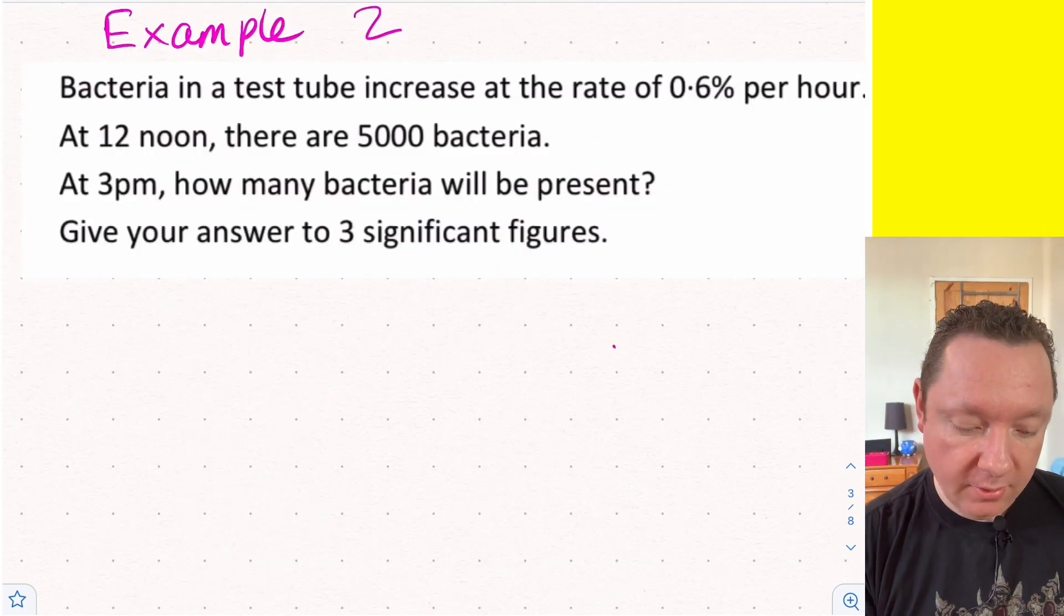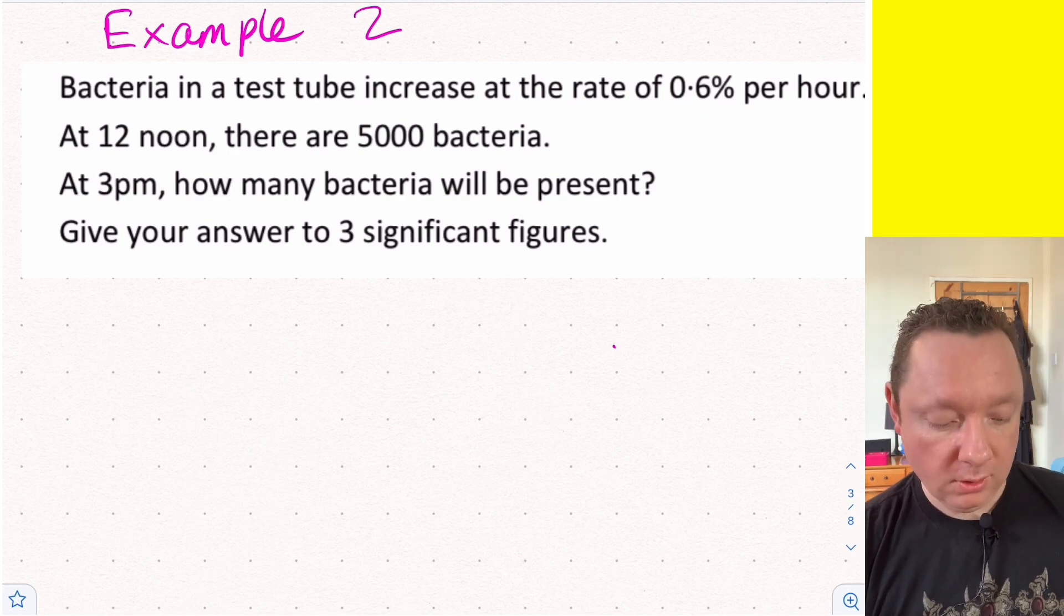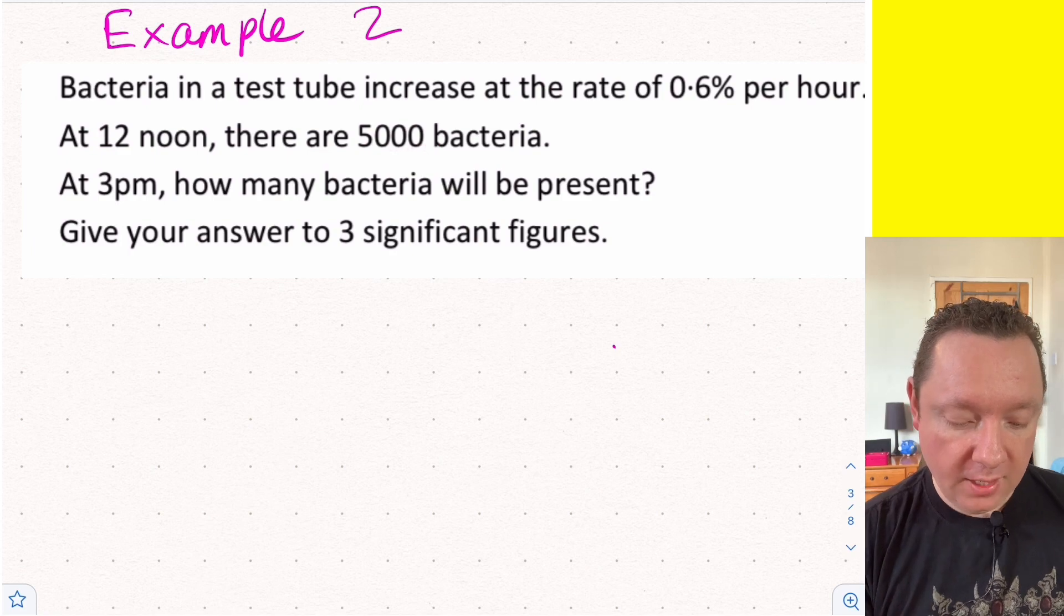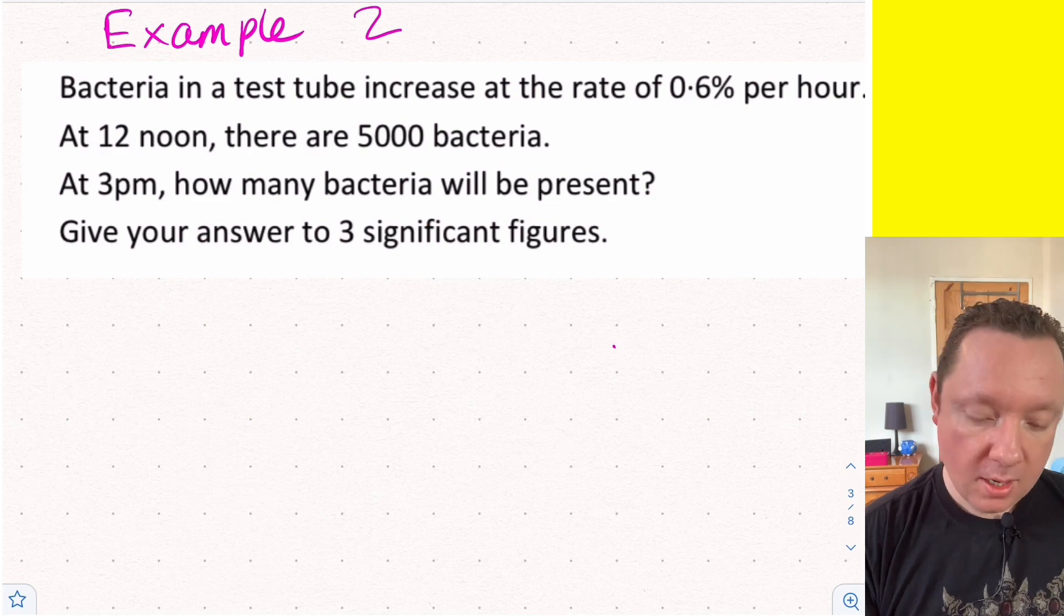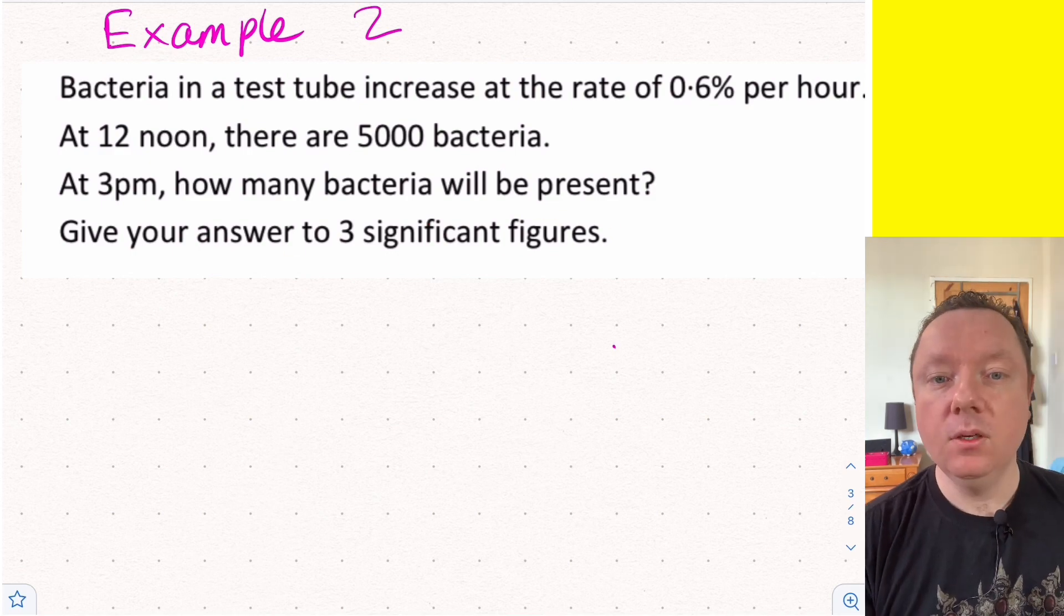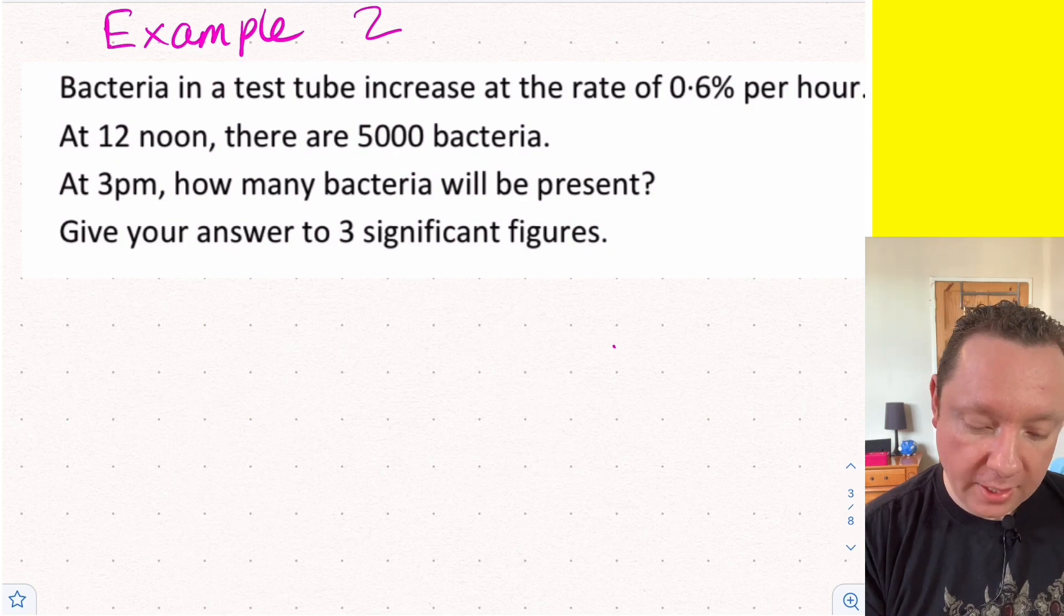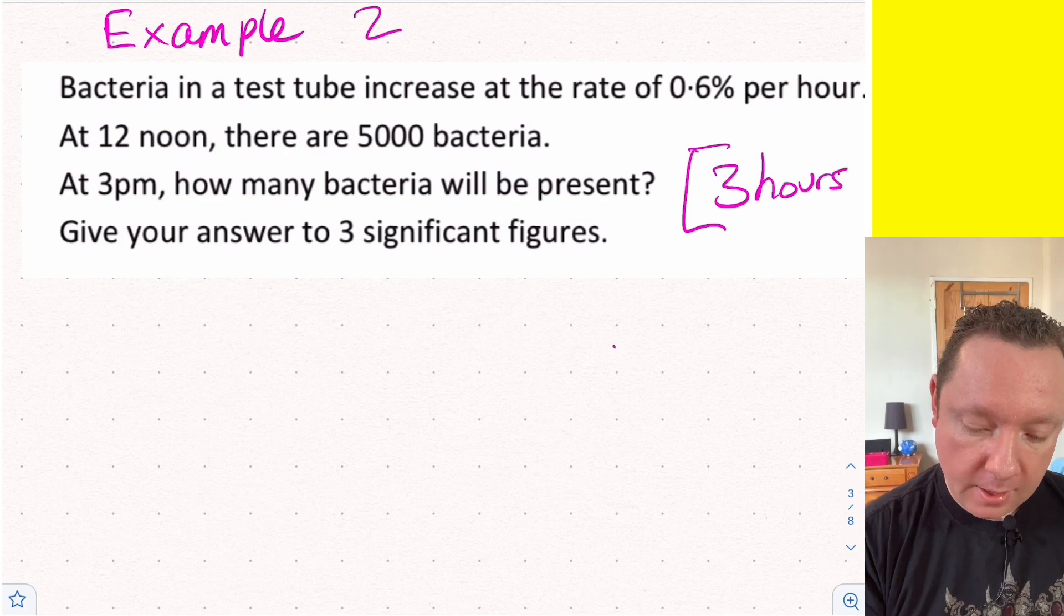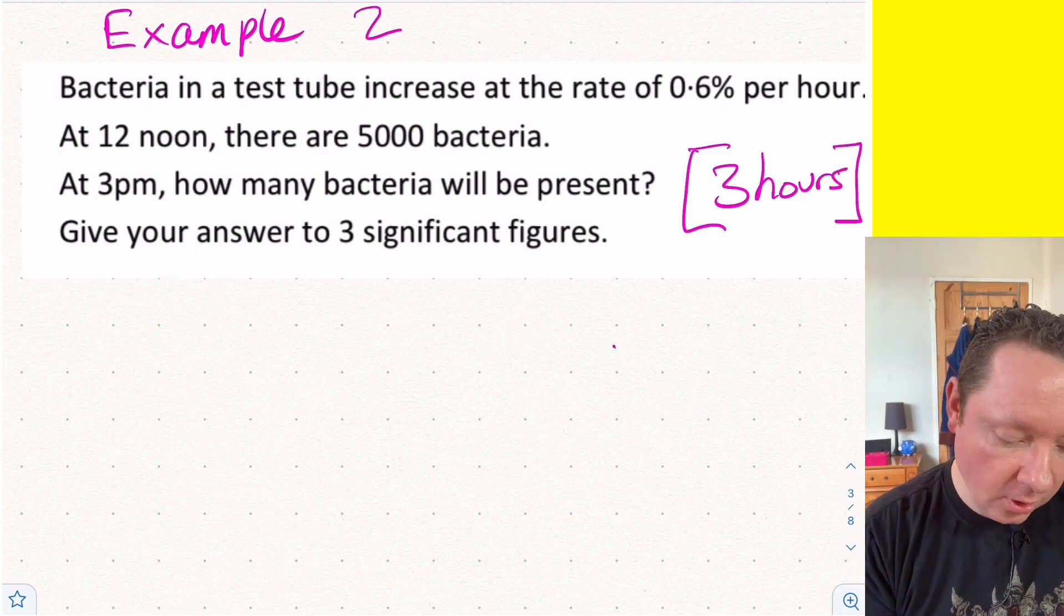Let's look at another example. Example 2 says bacteria in a test tube increase at the rate of 0.6% per hour. At noon there's 5000. At 3pm, how much will be present? We've to give our answers to three significant figures. We need the time - nice and simple, 12 till 3, that's 3 hours. Then we start our question the same way as the last one - find our multiplier.